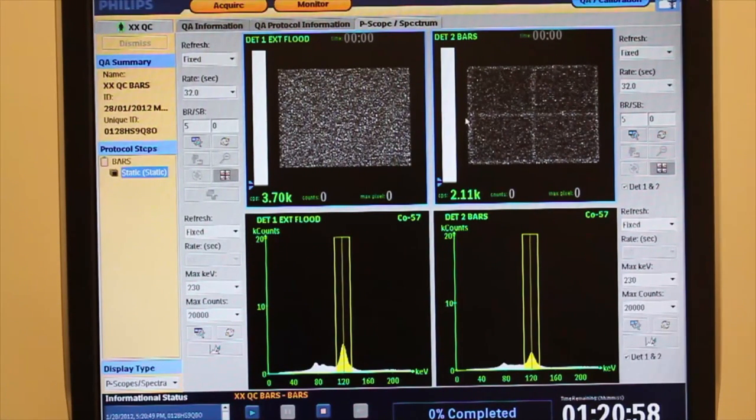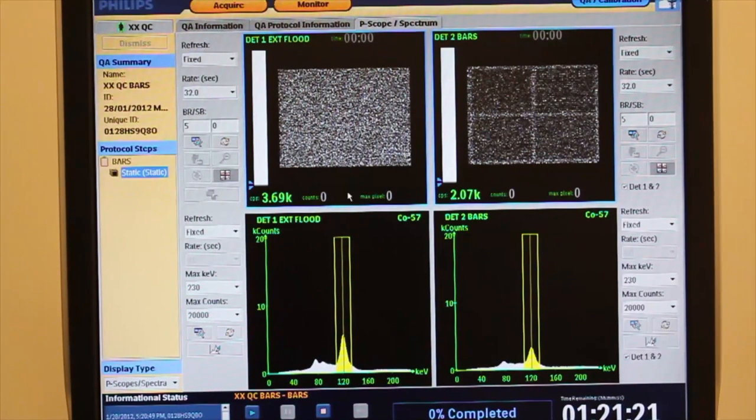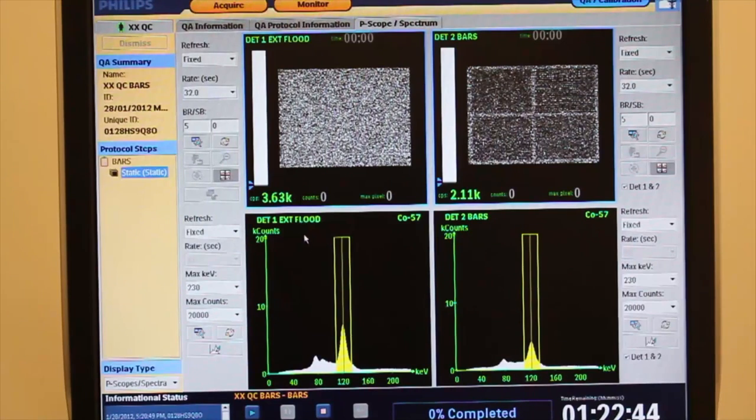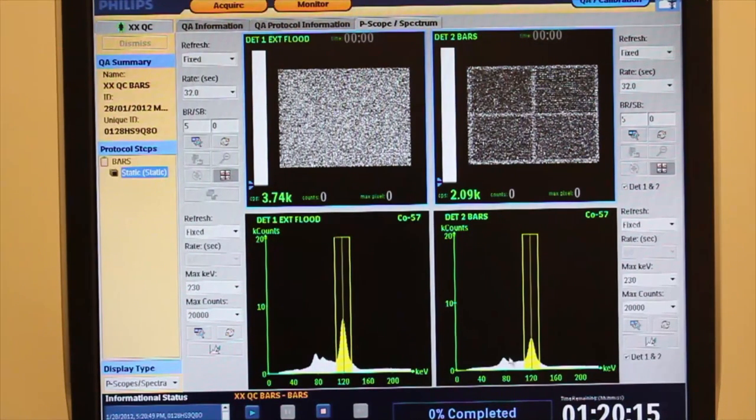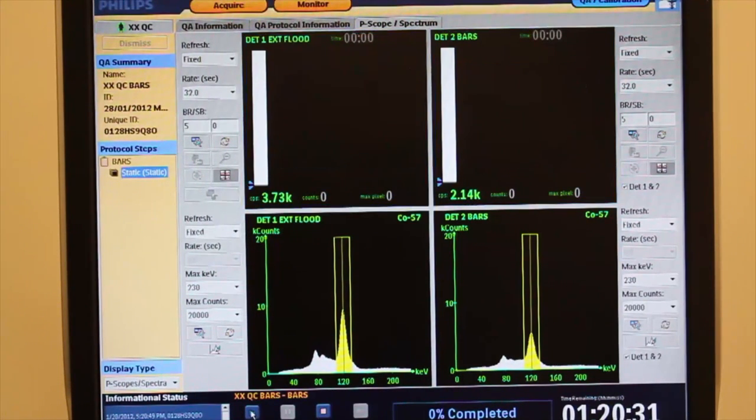If we chose to do an extrinsic flood on detector one, we would peak it. Detector two having the bars acquisition would have been peaked previously. Note the decreased count rate on the detector with the bar phantom on due to the attenuation of the lead bars.